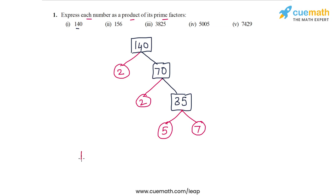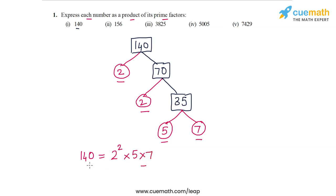The prime factorization of 140 is now complete. So 140 can be written as 2 × 2 × 5 × 7, or equivalently as 2² × 5 × 7. This is how 140 can be expressed as the product of its prime factors. That completes part 1.